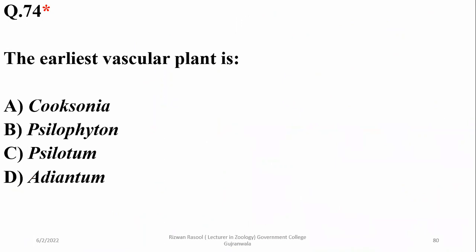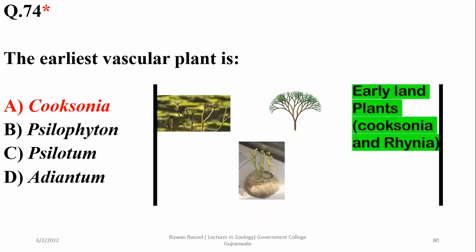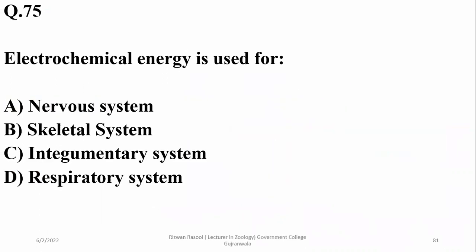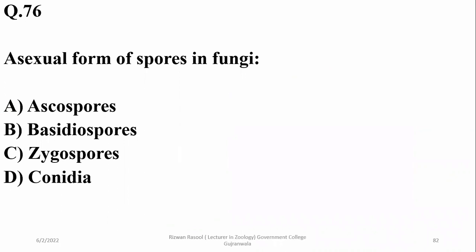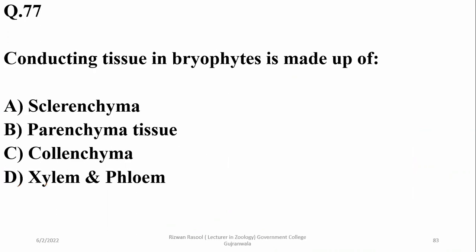Number 74. The earliest vascular plants are Cooksonia and Rhynia, according to the fossil record. So alpha. Number 75. Electrochemical energy is used during transmission of nerve impulse. So alpha is the right option. Number 76. Asexual forms of spores in fungi are conidia, or sometimes blastospores as well. So delta is the right option.